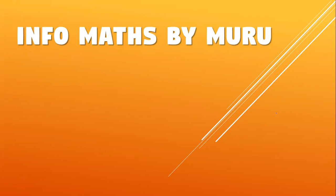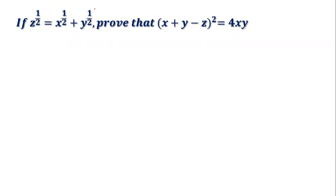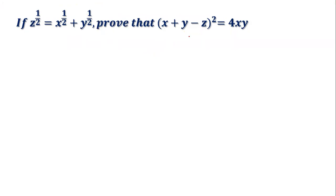Let us move on to the question. So the given information is: z to the power of 102 equals x to the power of 102 plus y to the power of 102. This is our given, and we're going to use this given information to prove the required expression.